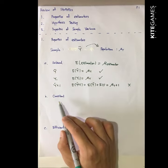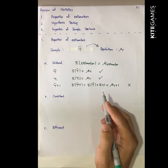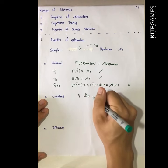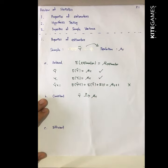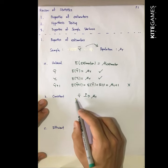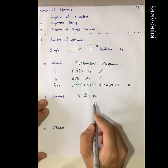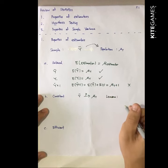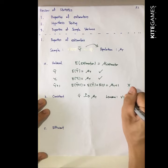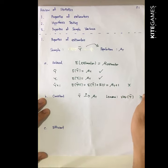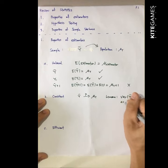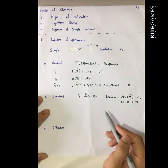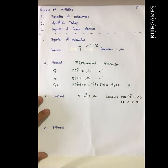The second property is called consistency. The definition of consistency is that the probability limit of the estimator goes to the true population mean. So when the sample size becomes bigger and bigger, the estimate in the sample approaches the true population mean. We use the lemma that the variance of the estimator goes to zero as n goes to infinity as one way to check consistency. The other way is to see whether the estimator converges to the population value.